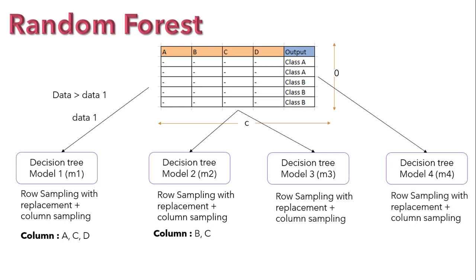So guys, there may be chances that some of the records are present in more than one model due to replacement in row sampling, and that's not a problem because most of the observations will be unique for each decision tree model.